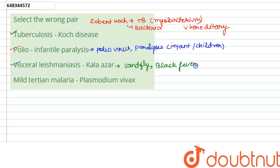Because the body of the person, the skin of the person, it turns almost to black, so this kala azar is also known as black fever and it has been correctly matched. Last one says mild tertian malaria with Plasmodium vivax which is incorrectly matched.